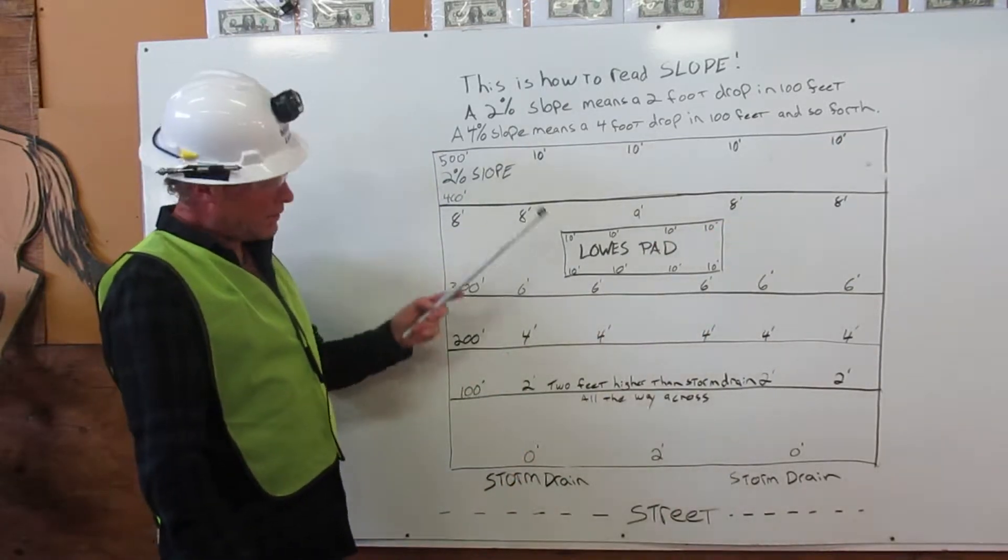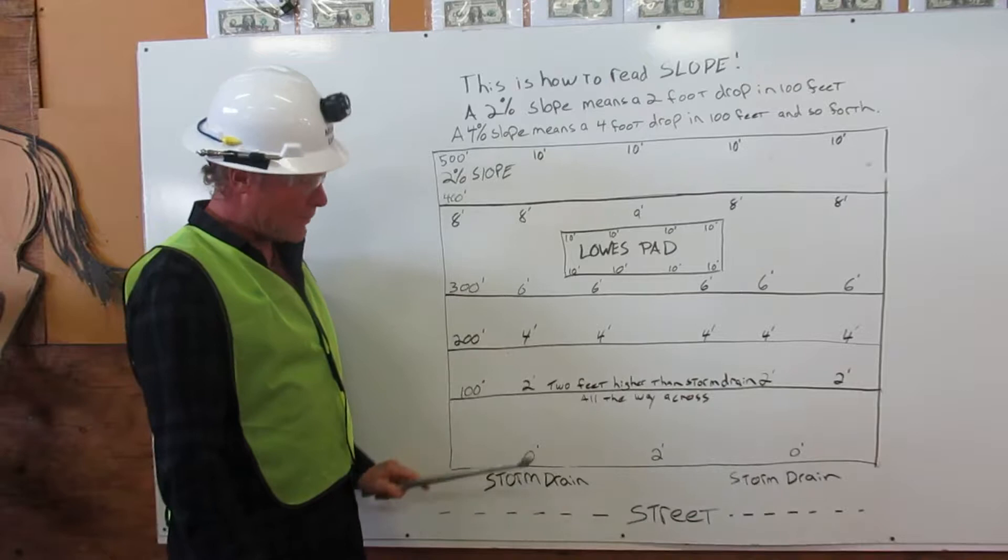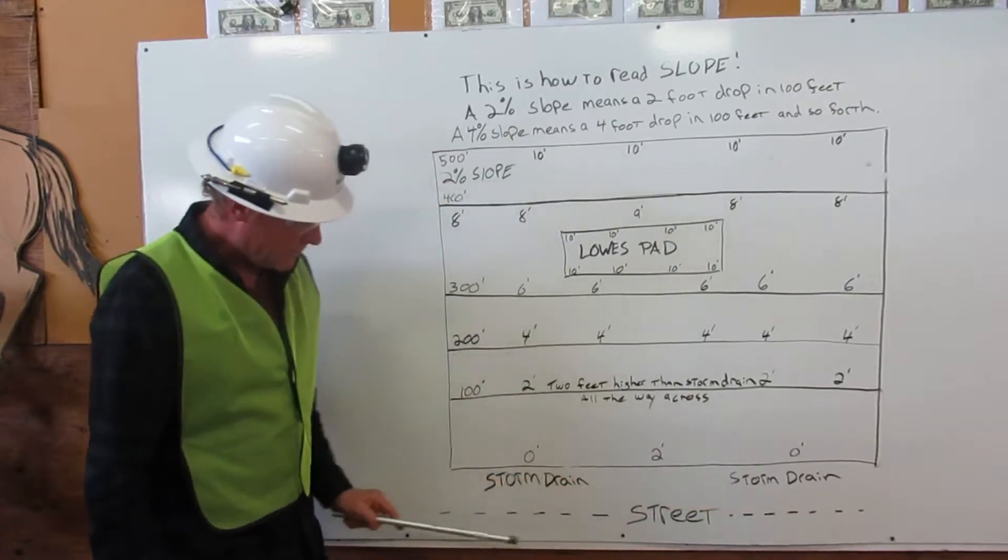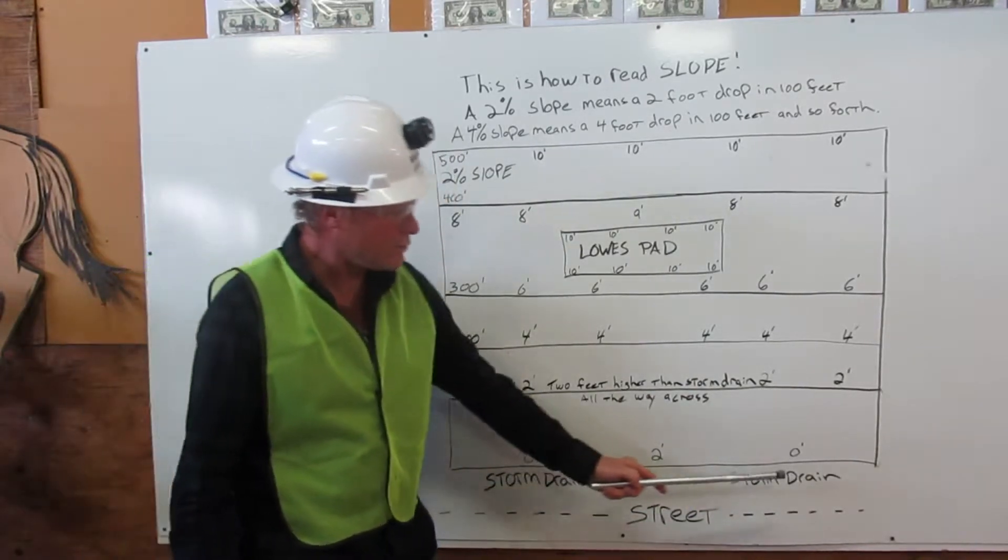Here we have a parking lot, a Lowe's parking lot for example. Down here is our street, with storm drains here and here.